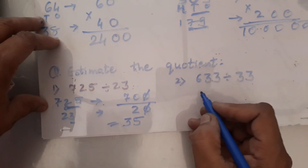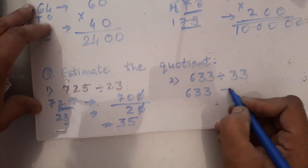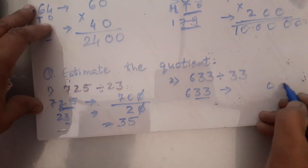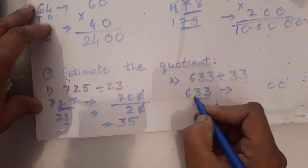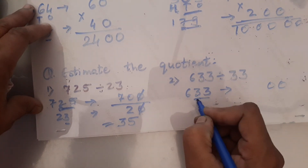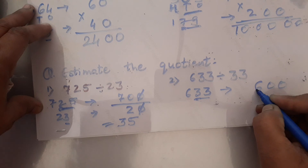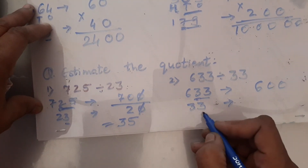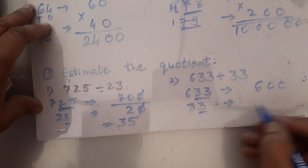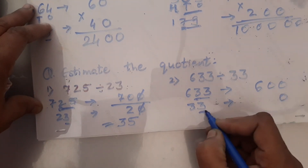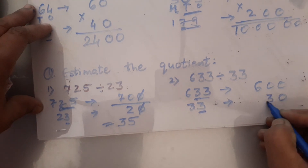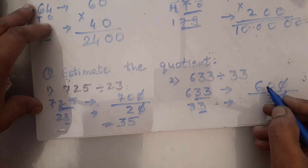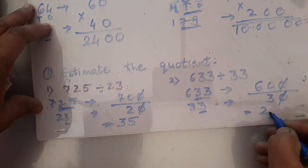Next question: 633 divided by 33. 633 rounded to nearest hundreds: digit at higher place is 3 — condition not satisfied, so 6 remains as 600. 33 is a 2-digit number — round to nearest tens: condition not satisfied, so 3 remains as 30. Divide: zeros cancel, leaving 60 divided by 3, which equals 20.